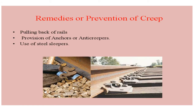Then come the remedies for prevention of creep. The first remedy is the pulling back of rail. If the creep is distinctly visible, the remedy is to pull back the rail to its original position. For doing this, we first inspect the track, note the extent of pulling back distance, and then workers will use crowbars, hooks, etc. to pull the rail back into the exact position.